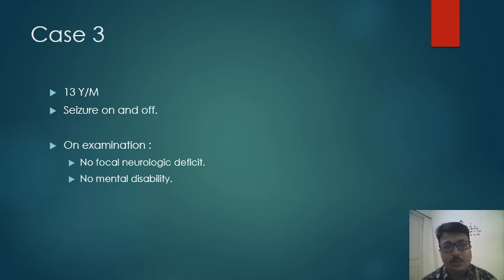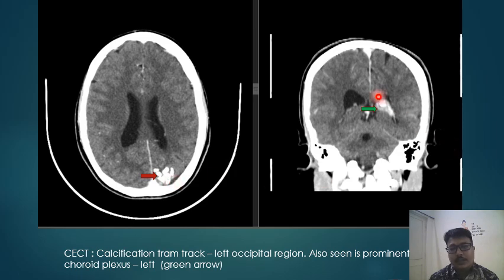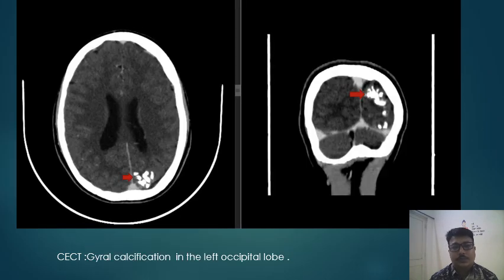Case 3 is a 13-year-old male who presented with seizures on and off. On examination, there was no focal neurological deficit and he does not have mental disability or mental retardation. CT scan axial and coronal sections show gyral calcification in the occipital lobe, indicated by the red arrow, and prominence of the ipsilateral choroid plexus identified by the green arrow. The same patient also shows gyral calcification visible in the axial and coronal sections of CT.